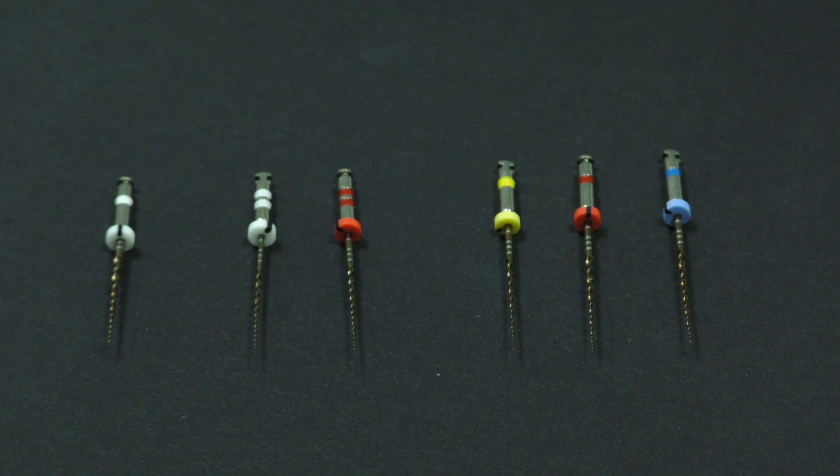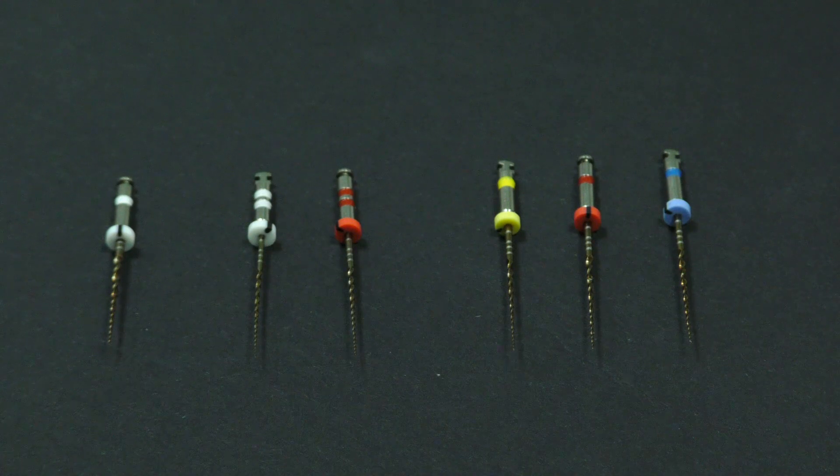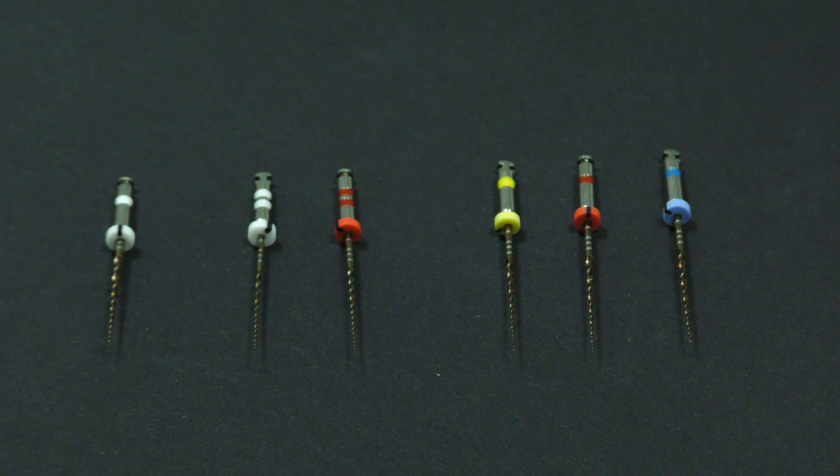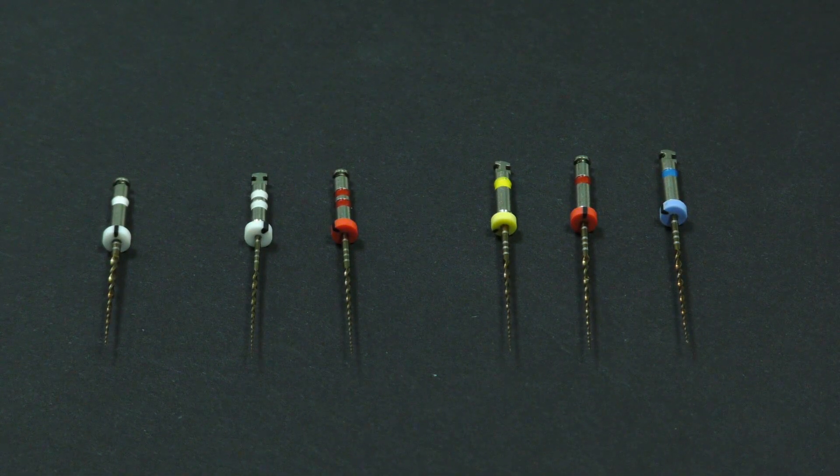Size 30-04 most frequently is the size root canal is finally shaped to, but VS Flexi files size 35-04 and 40-04 are also offered.